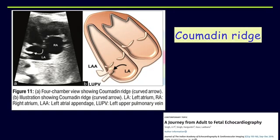Here you can see an echogenic area in the left atrium. Identification of this will indirectly indicate normal drainage of the left upper pulmonary vein, and therefore help exclude total anomalous pulmonary venous connection.